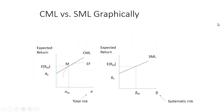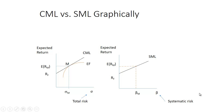Let's take a look at two graphs. On the left I have the capital market line; on the right I have the security market line. Both have expected return on the y-axis and some measure of risk on the x-axis. For the capital market line we have sigma, or standard deviation, which is a measure of total risk. For the security market line we have beta, which is a measure of systematic risk — the risk you can't diversify away.